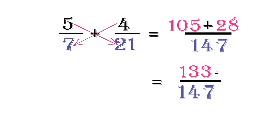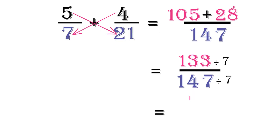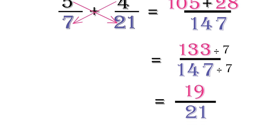We can reduce 133 over 147 by 7 to get 19 over 21. Please take note of this lengthy process — we will compare it to the LCM method we are about to learn.